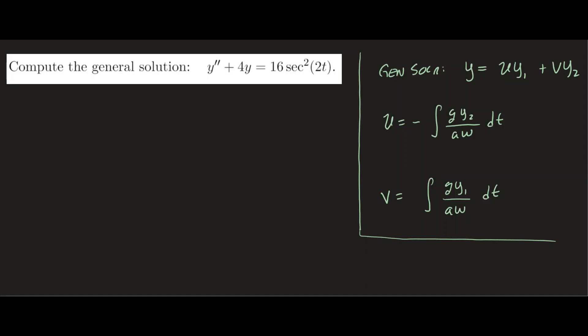First we're going to find the solution to the corresponding homogeneous equation. So let's call that yh. We're going to set g of t to 0. So we have y double prime plus 4y equals 0, and we have the characteristic as r squared plus 4 equals 0.